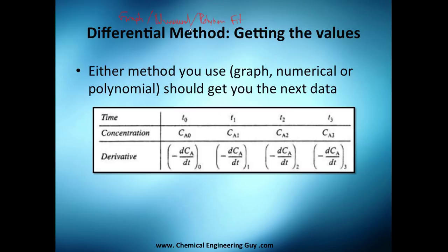We've seen how to get those differential values for the differential method. So either method you use - graph, numerical, or polynomial - you should get at the end of that process this table. So the first two rows here...